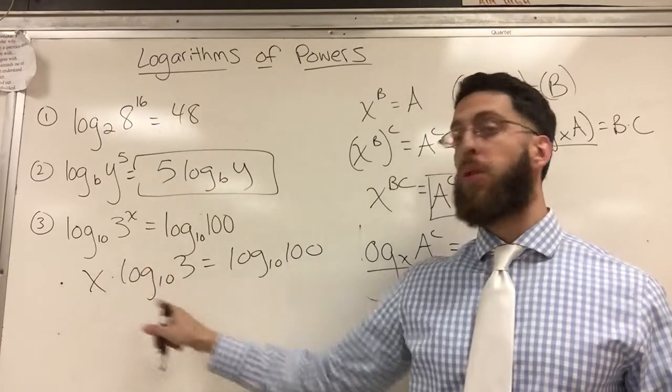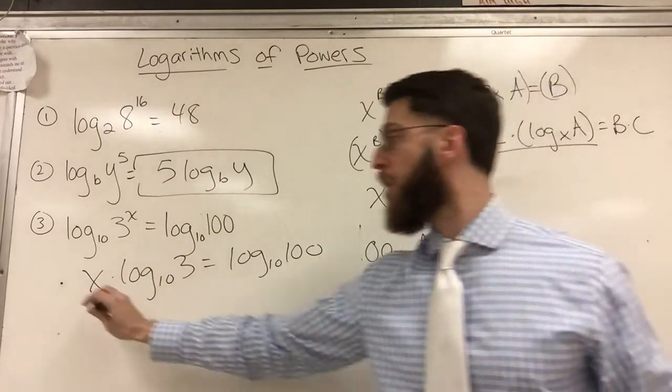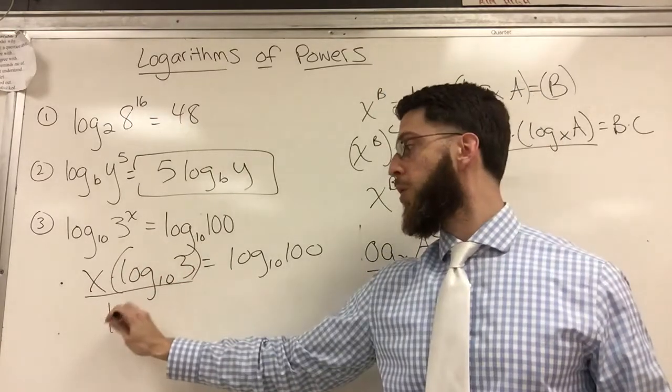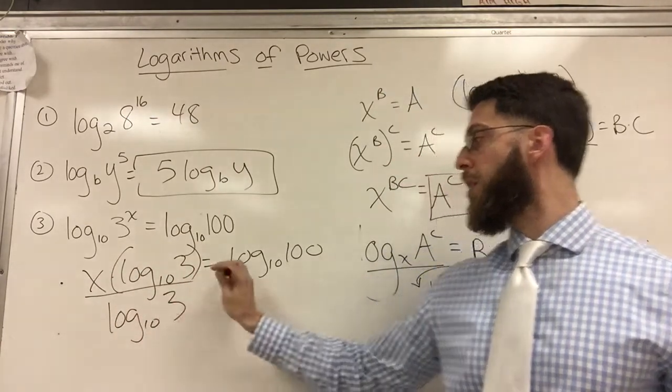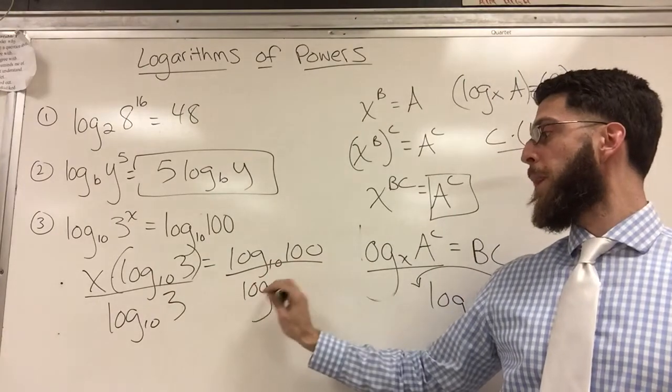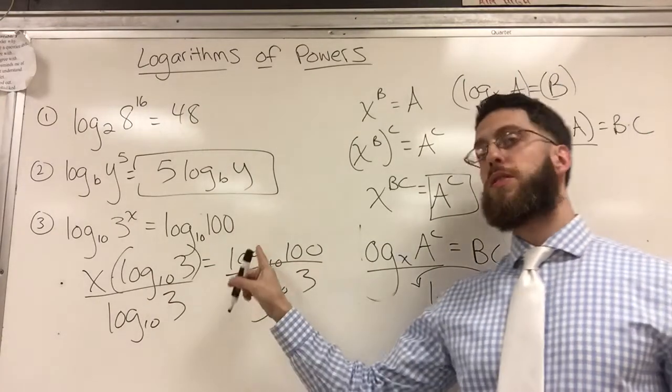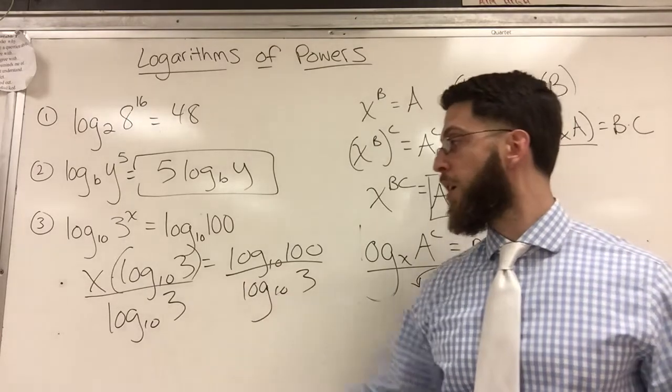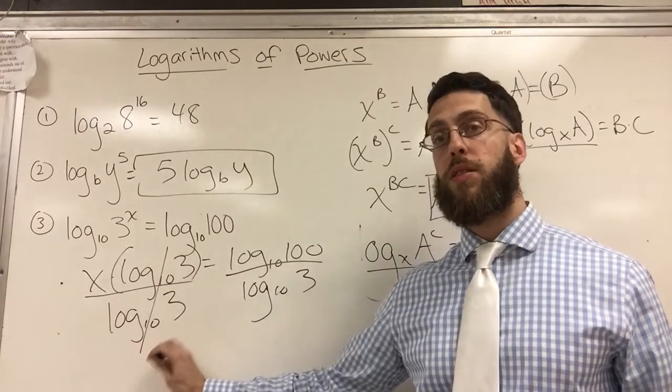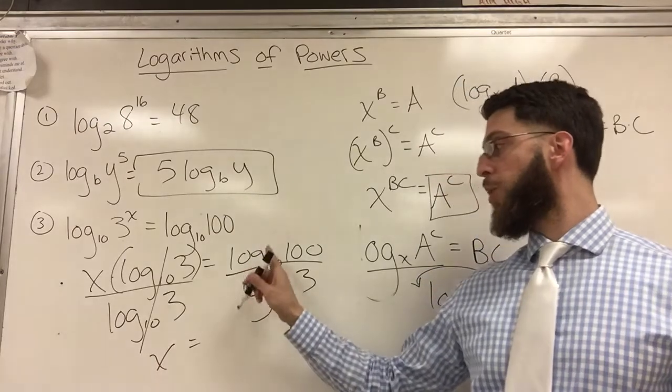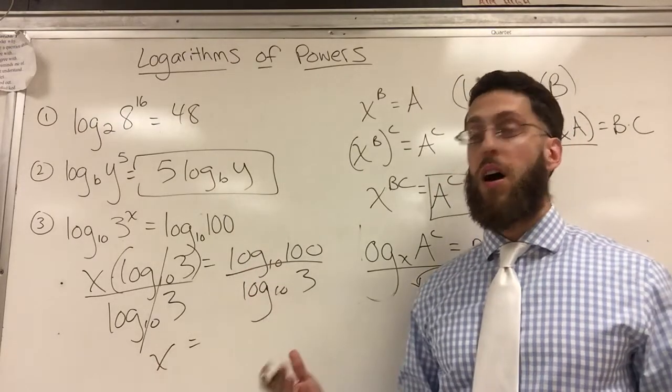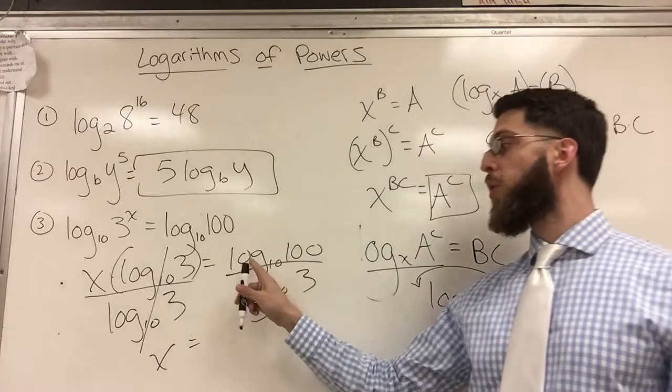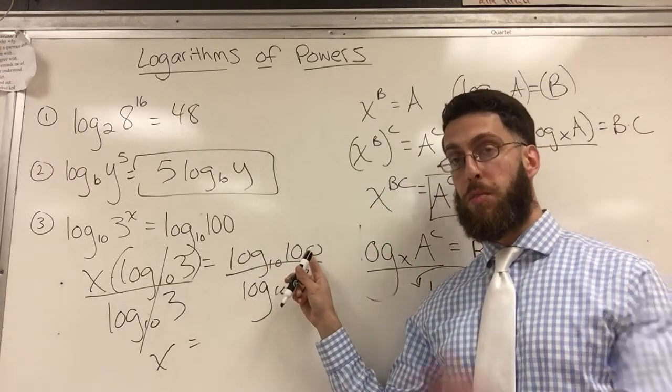This is an actual number that you can type in a calculator. Same thing. This is an actual number that you can type in a calculator. The only variable is the x. How do you get x alone? You divide by whatever's next to it called the coefficient. So if you divide by this entire coefficient, log base 10 of 3, log base 10 of 3, you would just simply type this in a calculator and get your result. So this will cancel, x is alone. And x is equal to whatever this divided by this is.